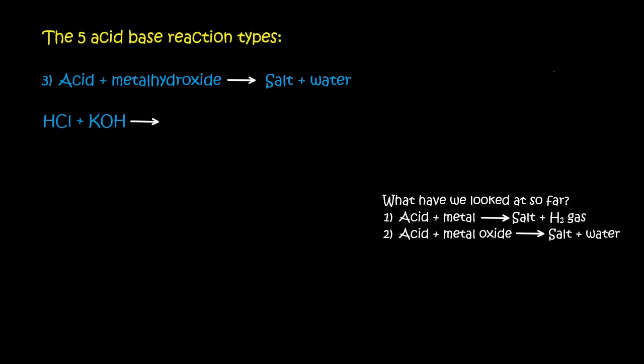The third one is when you have an acid plus a metal hydroxide. That also gives you a salt and water. So an acid, such as HCl. Now a metal is anything from the left of the periodic table, such as potassium. And then hydroxide is OH. Remember, it's a polyatomic ion. So it's got hydrogen and then oxygen. So it's called hydroxide.